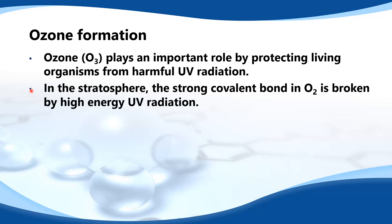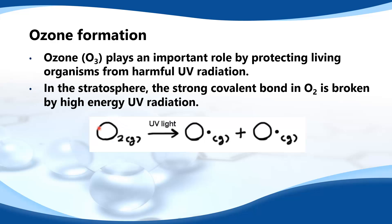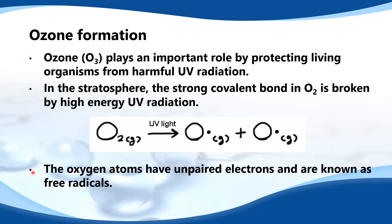In the stratosphere, the strong covalent bond in O2, which is molecular oxygen, is broken by high energy UV radiation. In the presence of UV light, the strong covalent bond between the two oxygen atoms is broken, forming two oxygen radicals. The oxygen atoms have unpaired electrons, shown by dots, and they're known as free radicals.